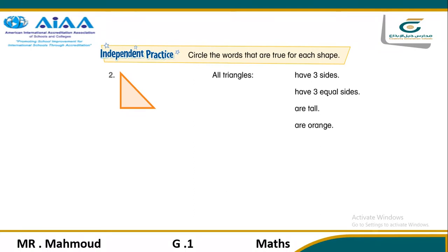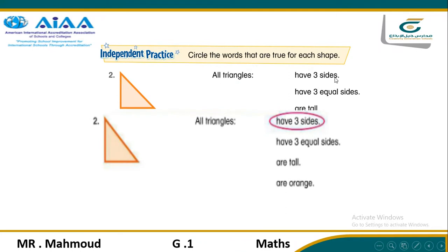Here is a question: circle the words that are true for each shape. All triangles: have three sides, have three equal sides, are tall, or are orange? Are all triangles orange? No — color does not define triangles. Are all triangles tall? No — size doesn't define all triangles. Do all triangles have three equal sides? No, not all triangles have three equal sides. Do all triangles have three sides? Yes. So we circle 'three sides.'